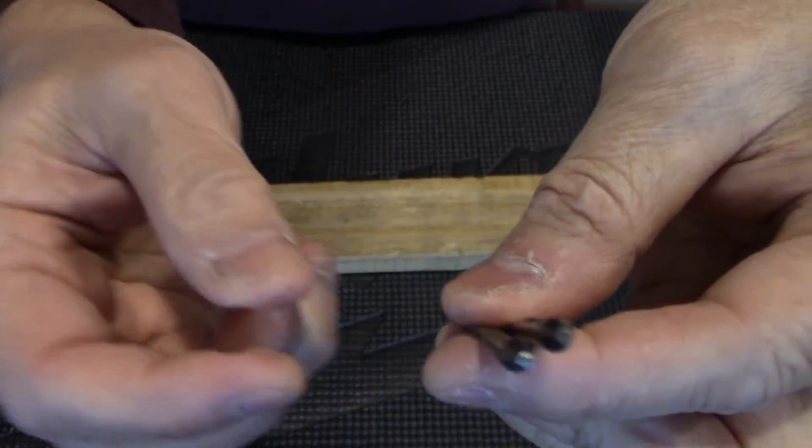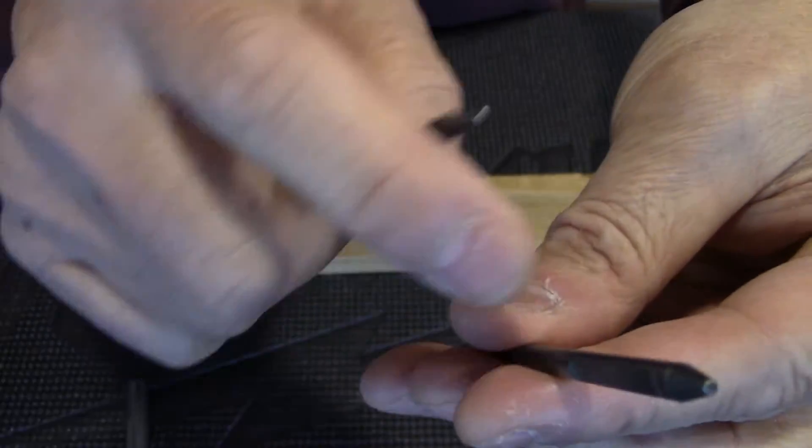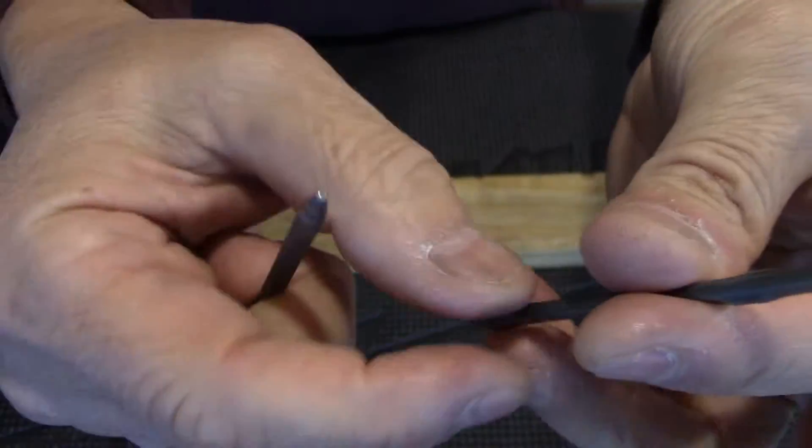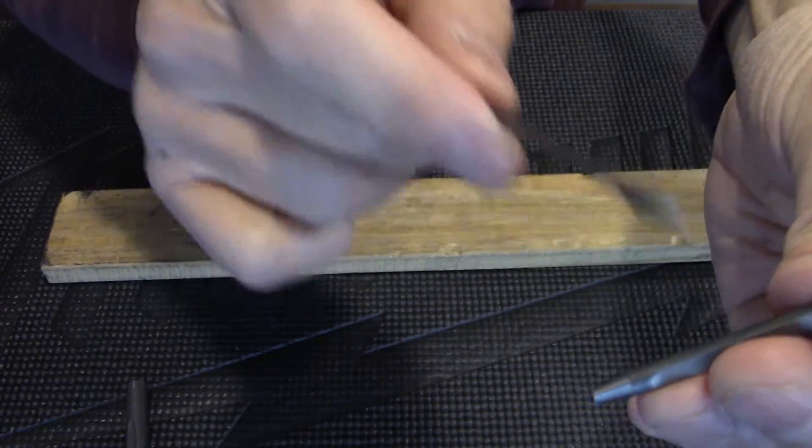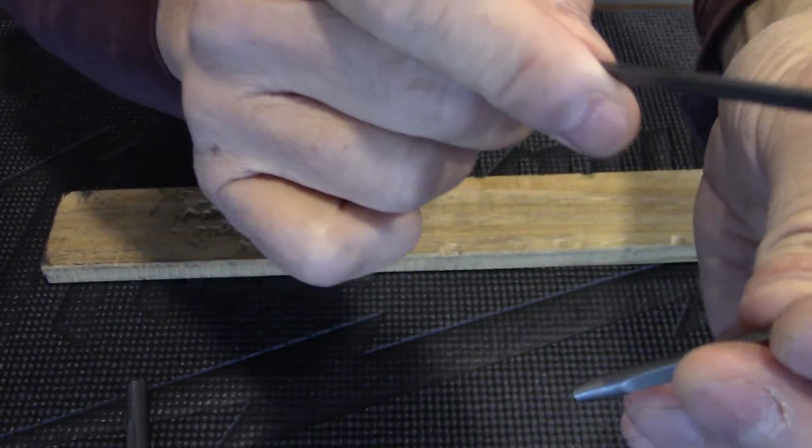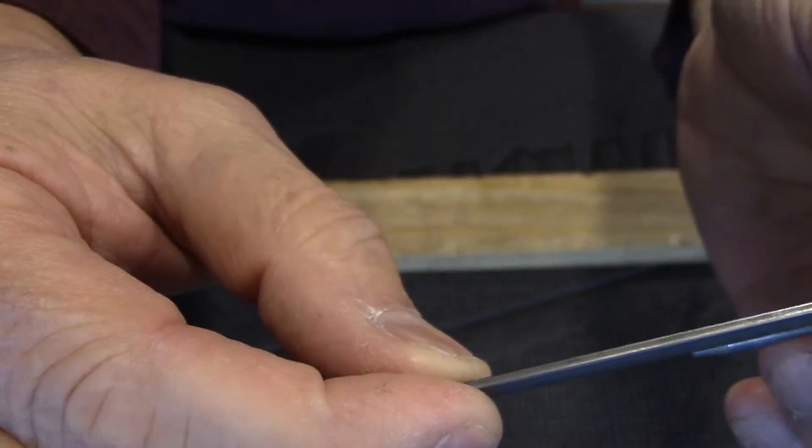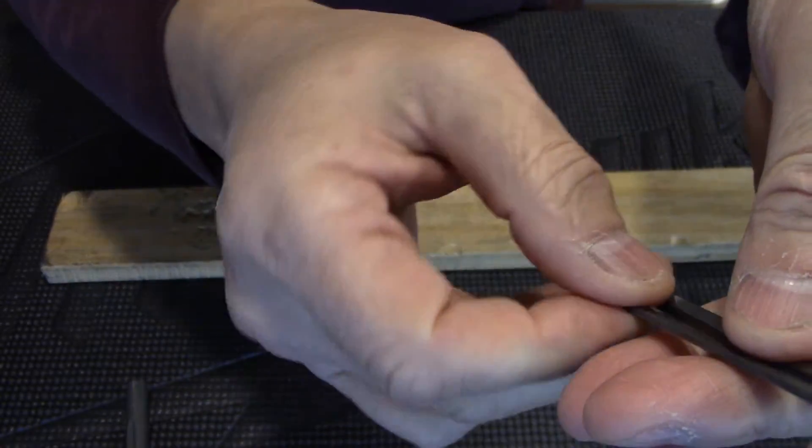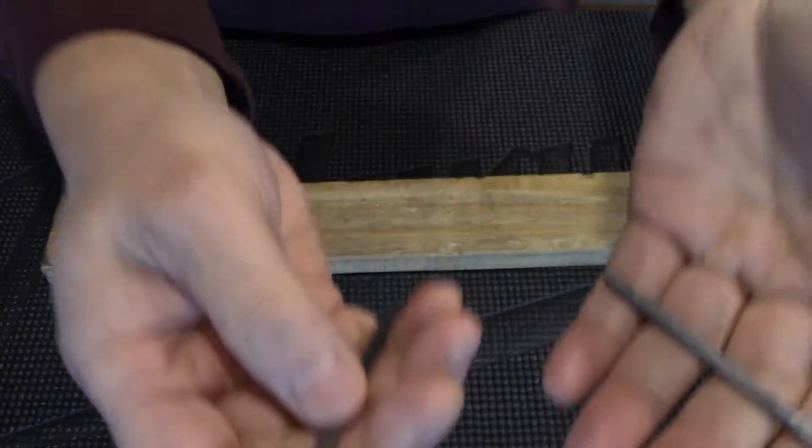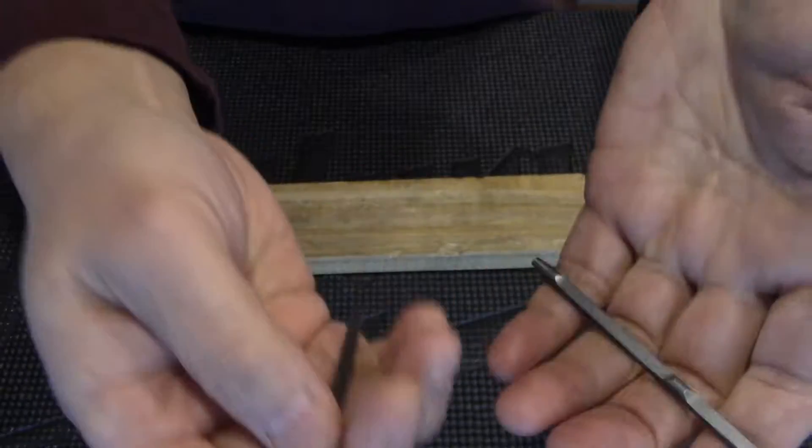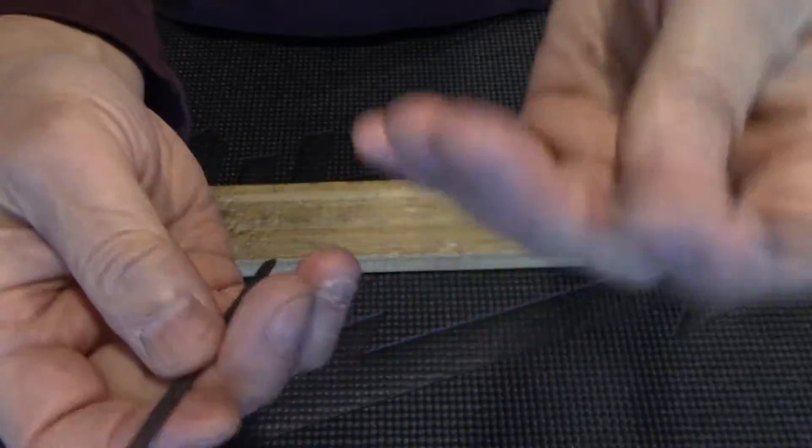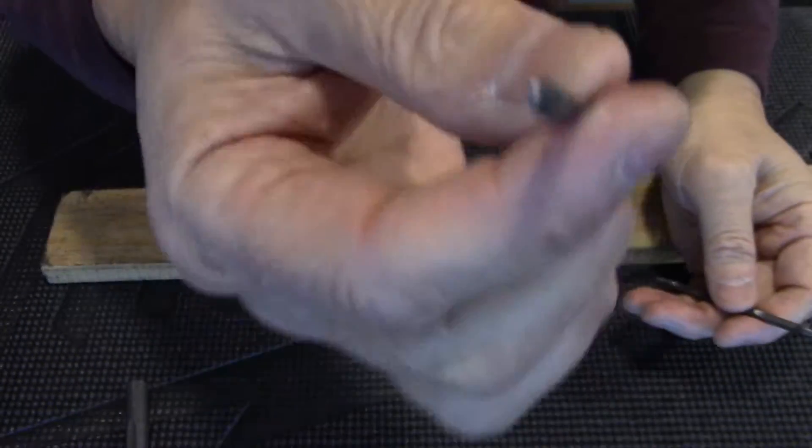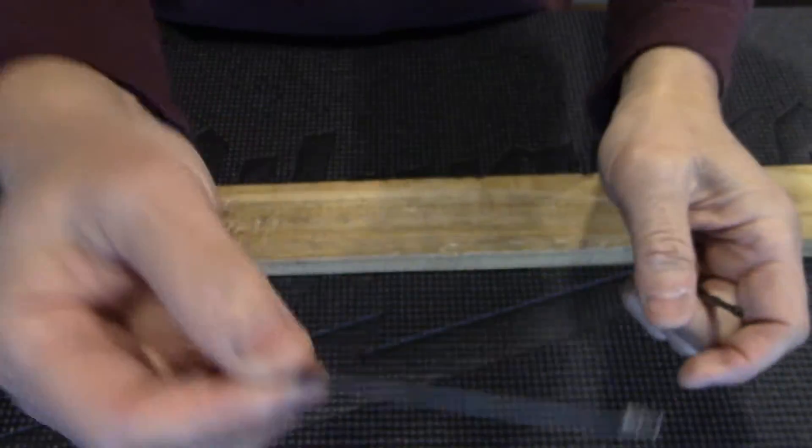I used a caliper and measured the width of the shaft. The SKS firing pin is twice as thick as this shaft. You can actually feel the difference. The weight of the SKS firing pin is a lot heavier than the one from the Type 81 rifle.